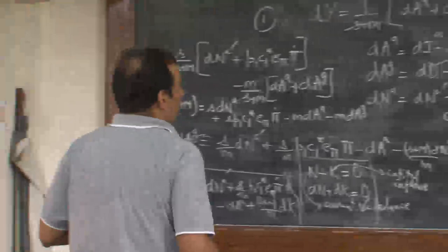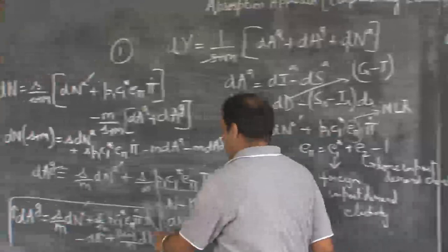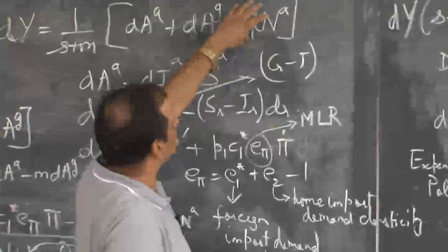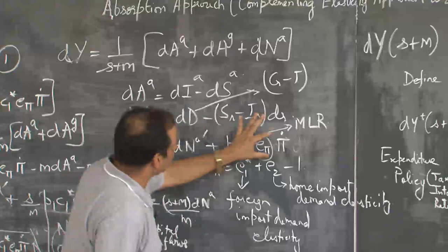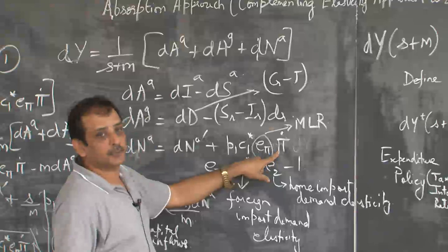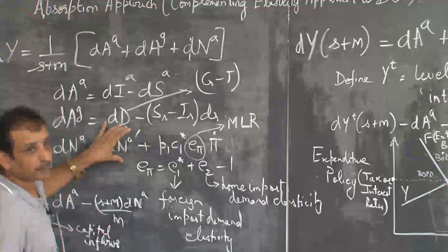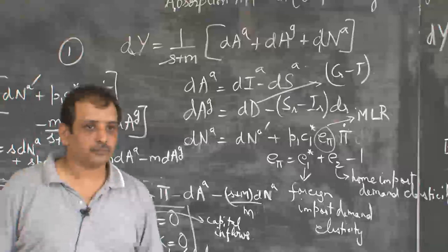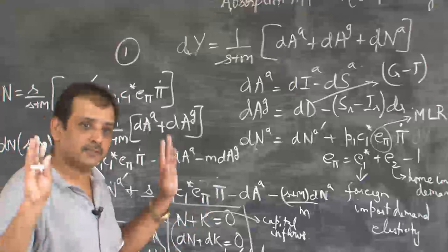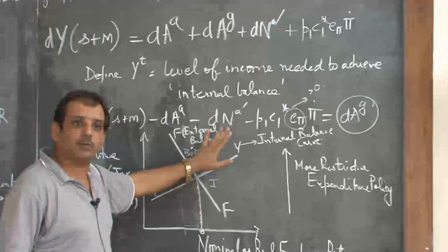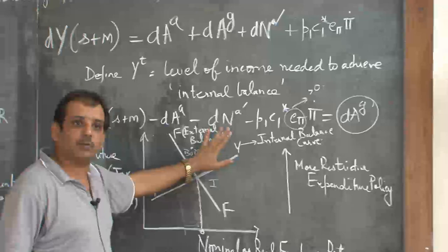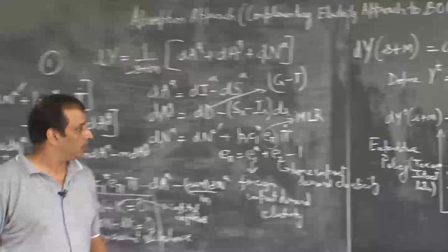If your economy is out of this equilibrium, is there a way to reach back to a point where you will have both internal and external balance? For that to happen, someone should be assigned the job of maintaining expenditure policy, and someone should be assigned the job of changing the nominal exchange rate. There are two instruments: the exchange rate and the expenditure policy, and you have two policy targets — internal balance and external balance. The assignment rule is that the number of instruments should be at least as large as the number of policy targets. All this holds with the assumption that the MLR condition holds.